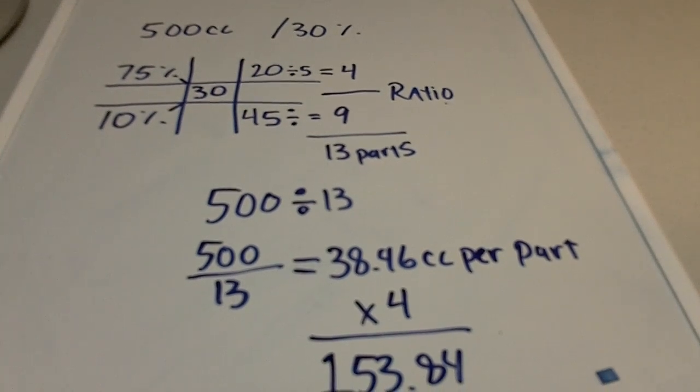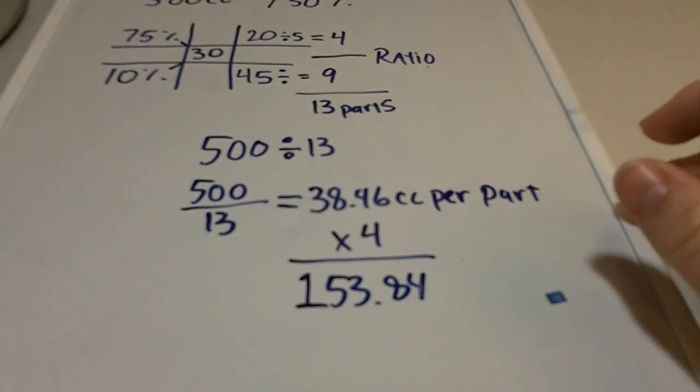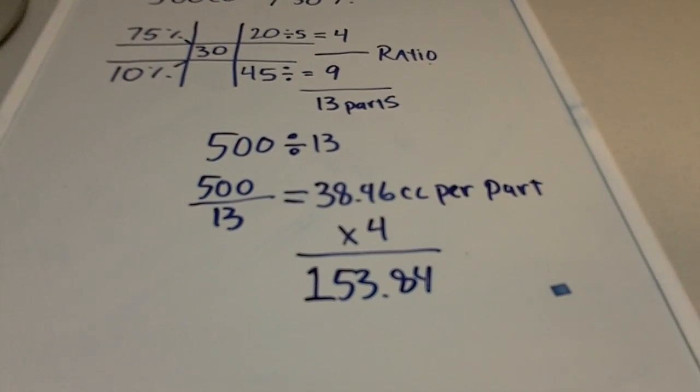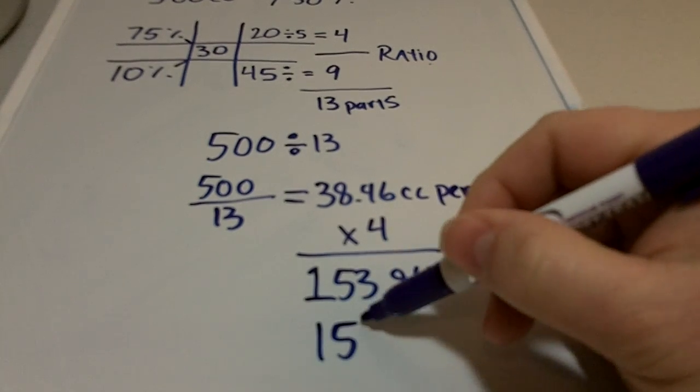At the very end of the question it says round the answer to the nearest whole integer. The nearest whole integer just means the nearest whole number. In this case that would be 154.